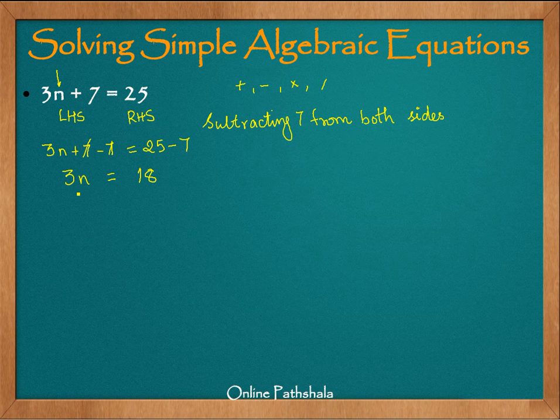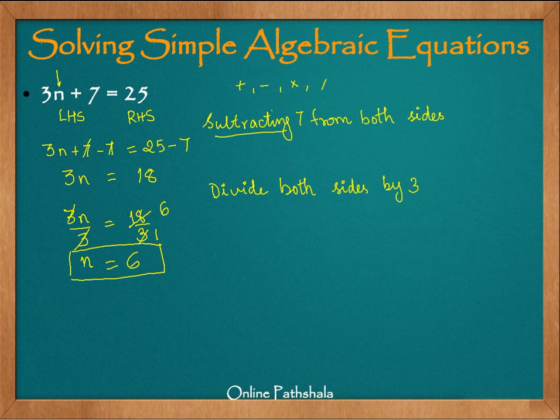Now, you can see that we have 3n and we have 18 but I still need to isolate the n. If I divide this term, 3n by 3, then 3 gets cancelled out. So our next step is dividing both sides by the number 3. That means 3n divided by 3 and 18 divided by 3. This 3 gets cancelled out and we have n equals 6. So this is how we solve this equation. We have to subtract and then we have to divide, two steps to isolate the n.